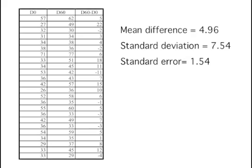To conduct the significance test, compute the difference between the D60 and the D0 conditions for each child and test whether the mean of these difference scores is significantly different from 0. The difference scores are displayed in this table in the column D60 minus D0. The mean of the difference scores is 4.96, the standard deviation of the difference scores is 7.54, and the standard error of the mean of the difference scores is 1.54.